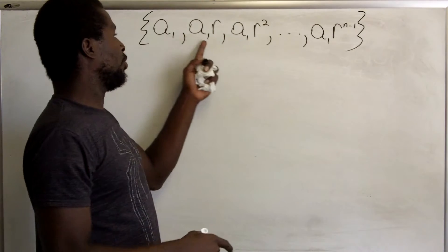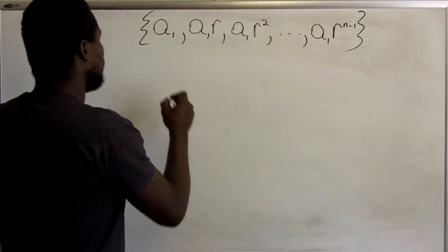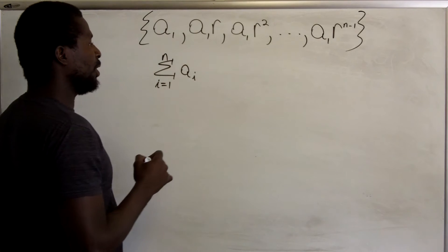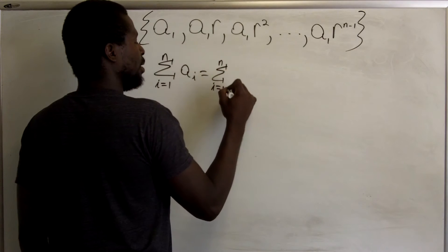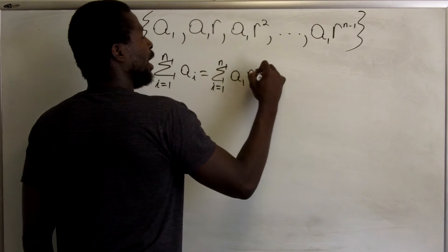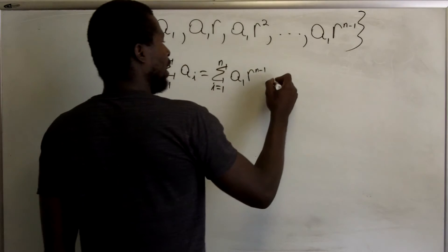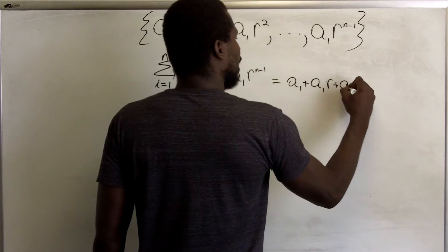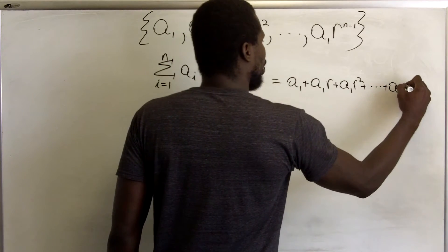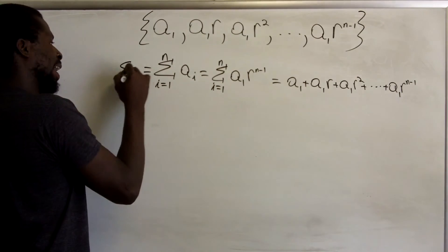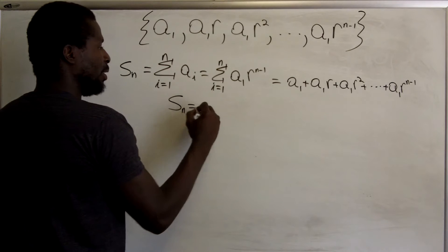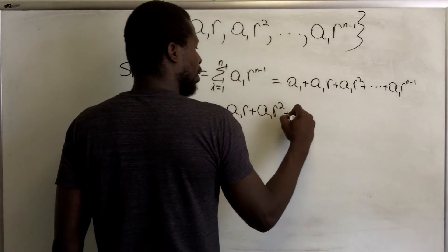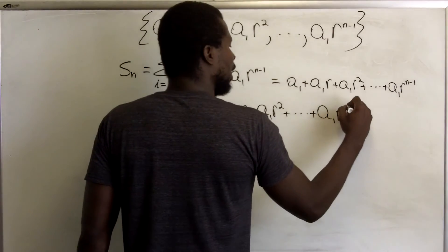We want to find the nth partial sum of a geometric sequence. That partial sum covers a1, a2, a3, all the way up to a_n. The sum from i equals 1 to n of a1 times r to the n minus 1 equals a1 plus a1·r plus a1·r² plus ... plus a1·r^(n−1). That's what the nth partial sum S_n looks like for a geometric sequence.